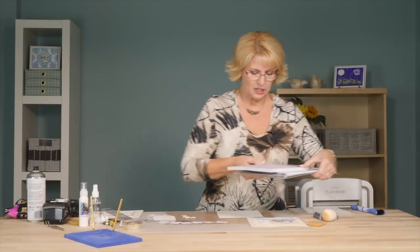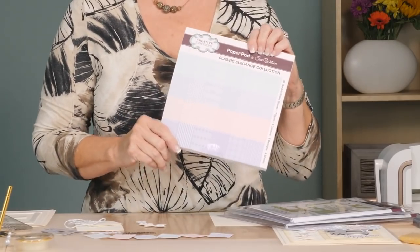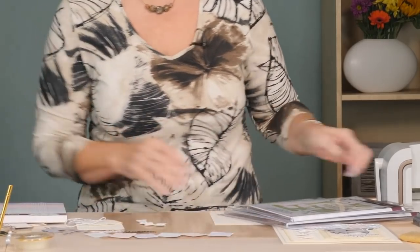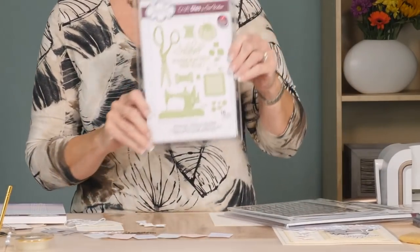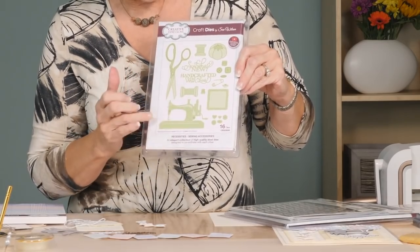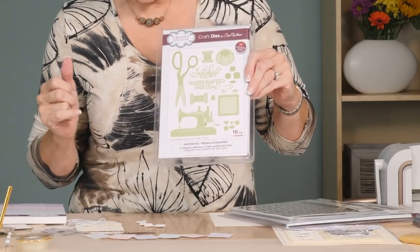I'm going to show you what we'll be using in today's video. I've cut some little squares out of the Classic Elegance paper pad. They kind of look like little quilts, it's quite cute. And out of our necessities range, this is the sewing accessories. So we'll be using the sewing machine, some of the little bobbins and this little quilt square here.